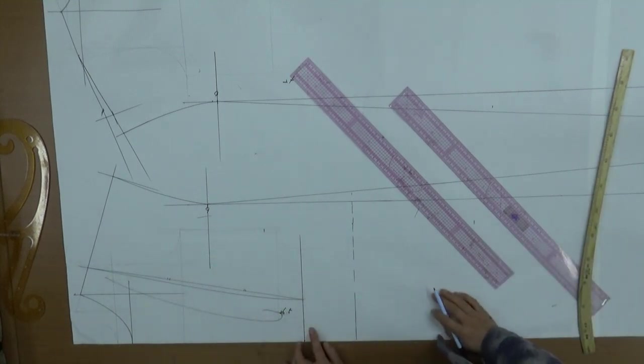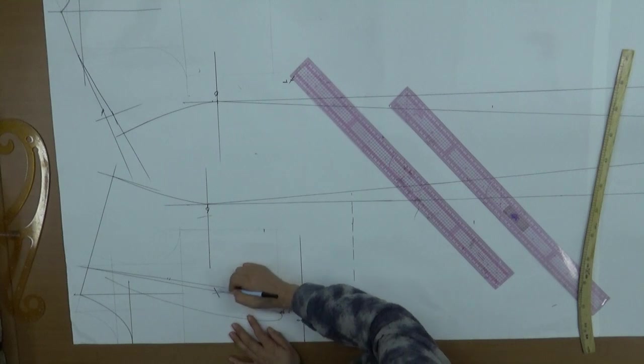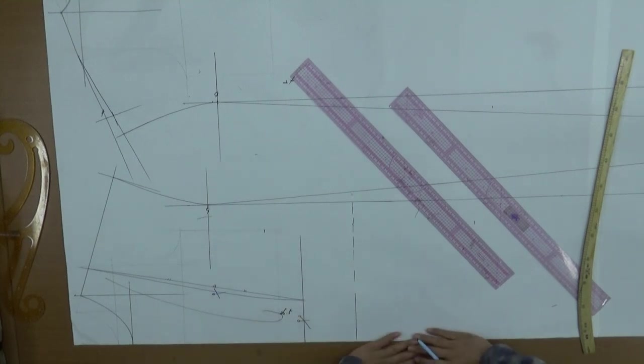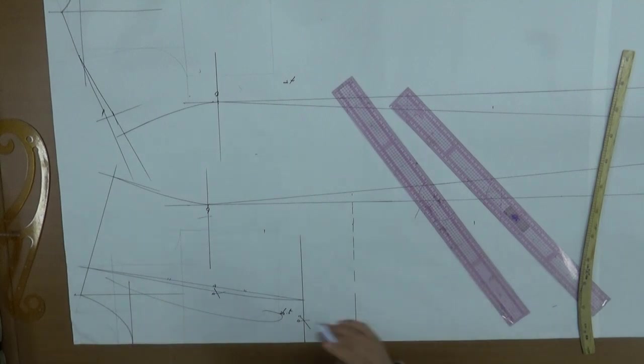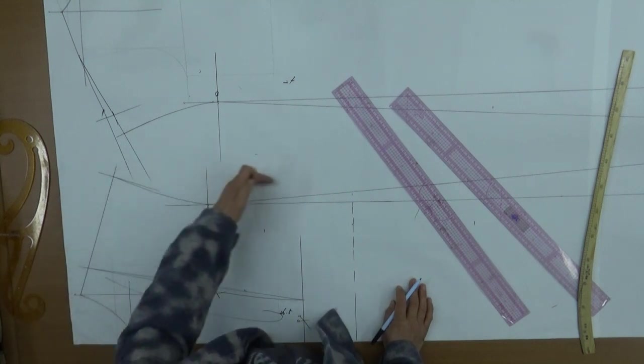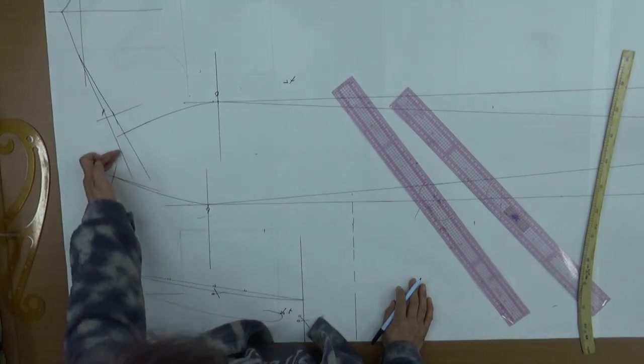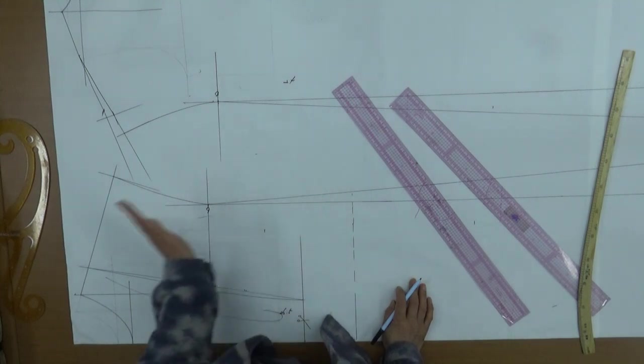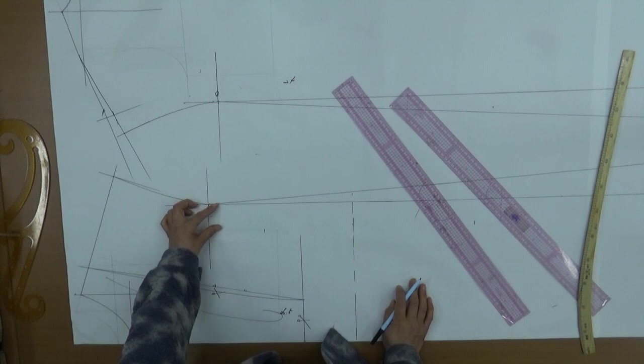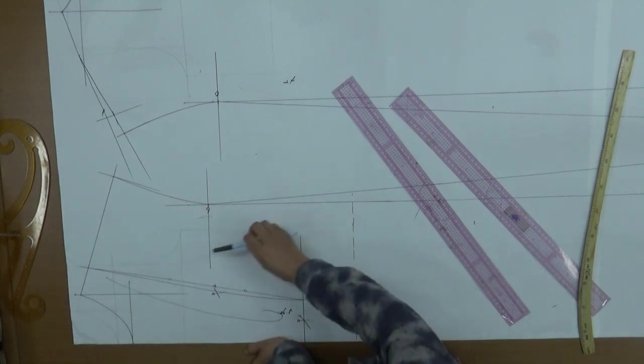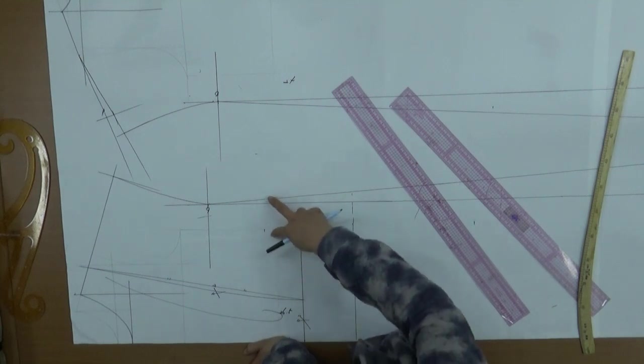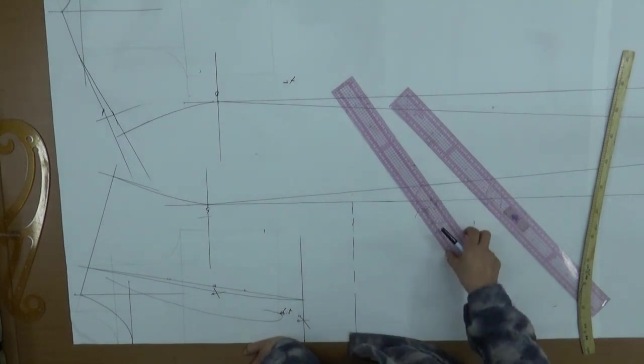Lower 1.5cm, then raise 1cm on the side. Clean up the hem like this and go. Then the armhole depth. Lower the armhole depth by 6cm. 6cm. Lower it, then I'll do the side neck. The side neck was 3.5cm.